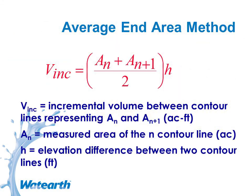We talked about the average end area method versus the conic approximation method for calculating volumes. We're looking for an elevation-volume relationship throughout the basin. If it's pretty uniform, you could end up with a zero-storage elevation, an elevation at the toe of slope, one at your design water surface, and one at top of bank. If it's not completely uniform, you might want steps in between — usually foot-type increments.